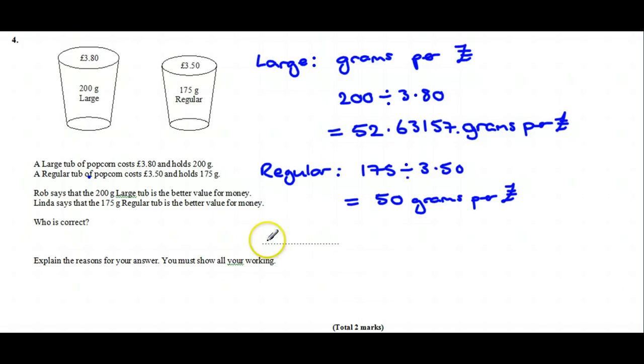So who is correct? Rob. And the reason for showing all the working up there is that the large tub gives more grams per pound, and you've got your numbers here and here to confirm that.